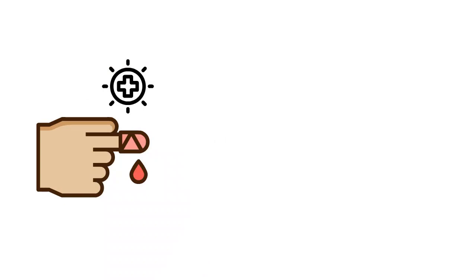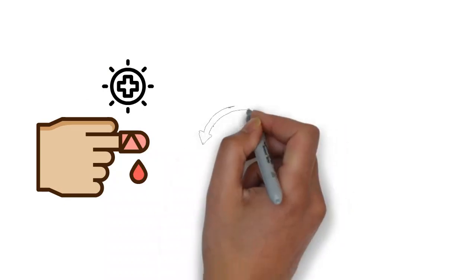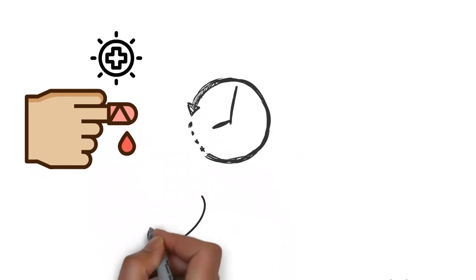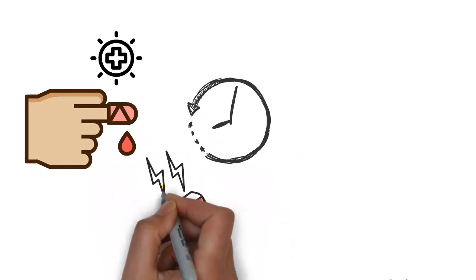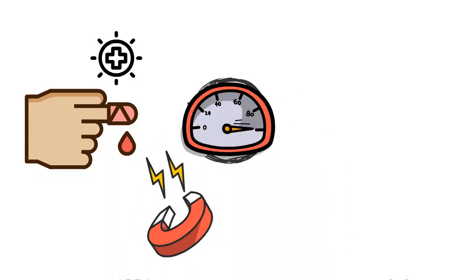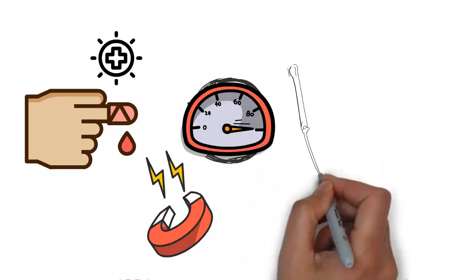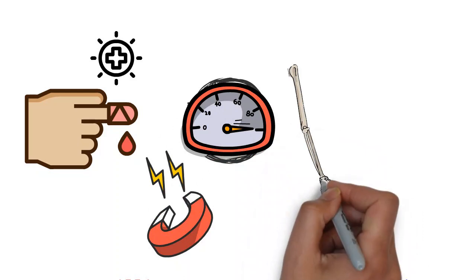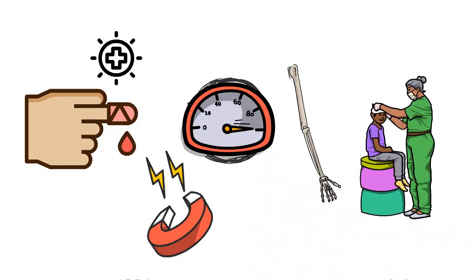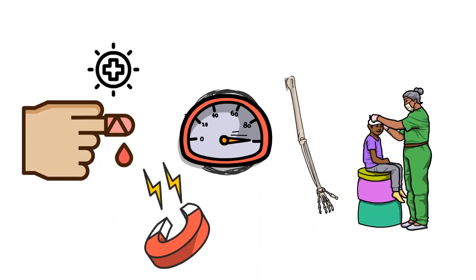The body will take whatever time it needs to heal that wound. Now if I wake up those cells with a magnetic field, I can increase the healing rate of that cut by half the time it would normally take. I would double the healing rate. The same thing applies to bones, the same thing applies to head injuries, TBI. Any tissue in the body that's not working properly can use the extra energy.